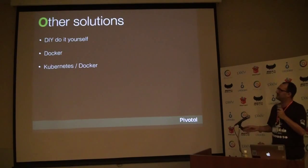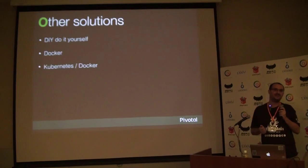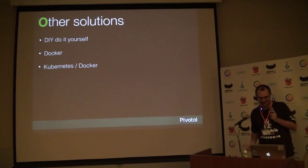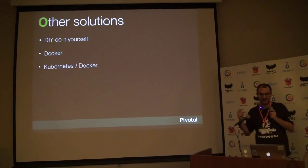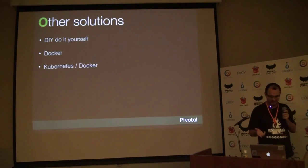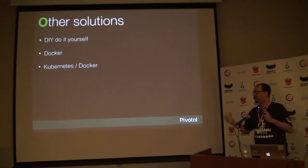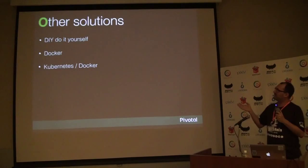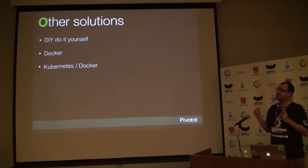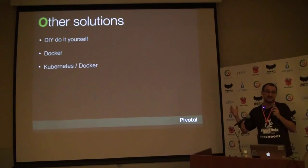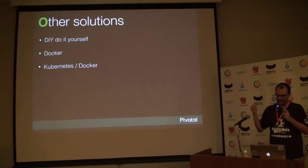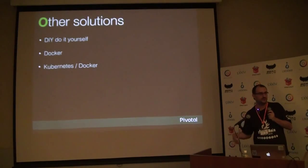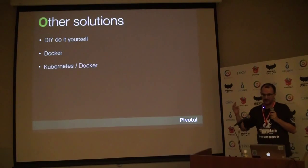For all of that, you can use CloudFoundry. Of course, there is also a do-it-yourself solution where you install and set up everything yourself. You have Docker, but there is no self-healing, no load balancing, or log aggregation — you need to set up these features around Docker. And you have Kubernetes, which is pretty nice, but as Casey said yesterday, Kubernetes is just a scheduler — it's not a PaaS. So if you want load balancing, you need to set up Nginx, etc. In Lattice, load balancing, self-healing, and scheduling are already there out of the box — you have nothing to do.